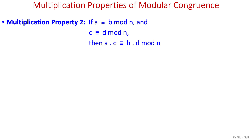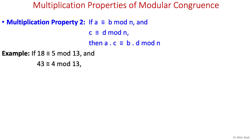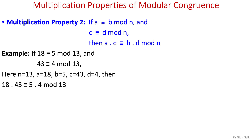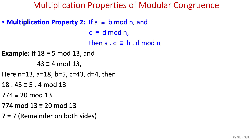Another multiplication property of modular congruence states that if we have two congruence relations with the same mod n — that is, a is congruent to b mod n and c is congruent to d mod n — then a times c is congruent to b times d mod n, and that is true. Let's check it with an example: if 18 is congruent to 5 mod 13 and 43 is congruent to 4 mod 13, we know all the values of n, a, b, c, and d. Placing these values in the congruence relation and multiplying the numbers, we get the final relation and their mods are equal. So this multiplication property is true.